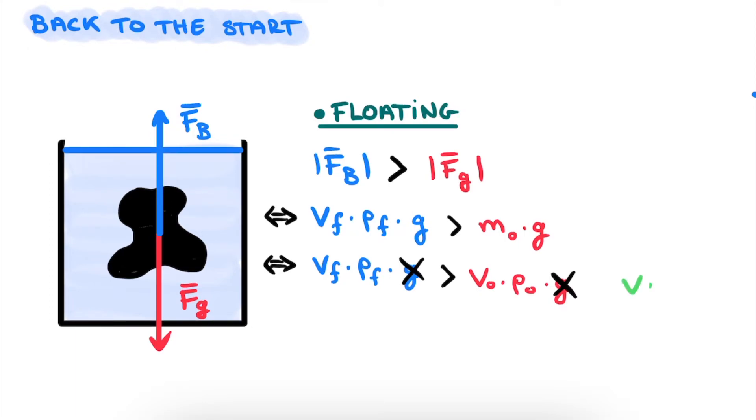And if the object is fully submerged in the fluid, as is the case on the sketch, then Vf is equal to Vo, and therefore they can be cancelled out as well. Then we are only left with the following intuitive explanation. The object floats if its density is lower than the density of the fluid. And for sinking objects, you can make the exact same reasoning, but just the other way around. And it is in this way that we arrive to the intuitive understanding that objects float or sink only based on the density of both the fluid and the object.